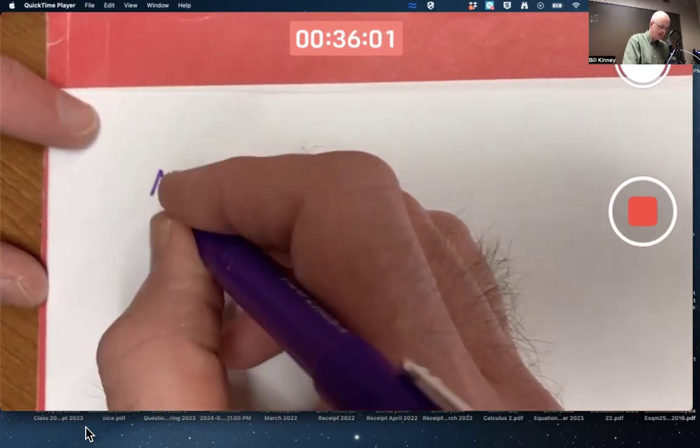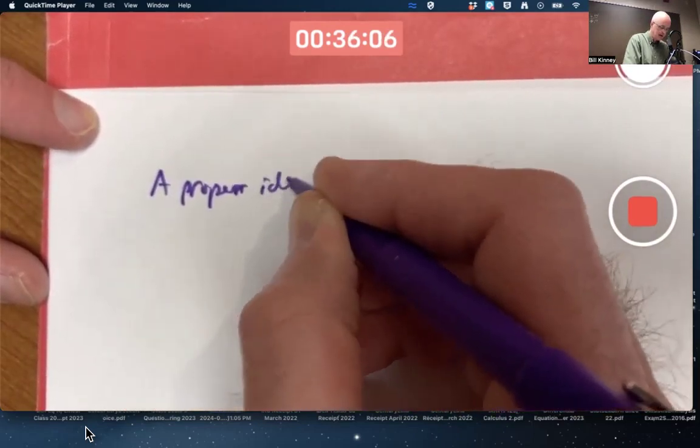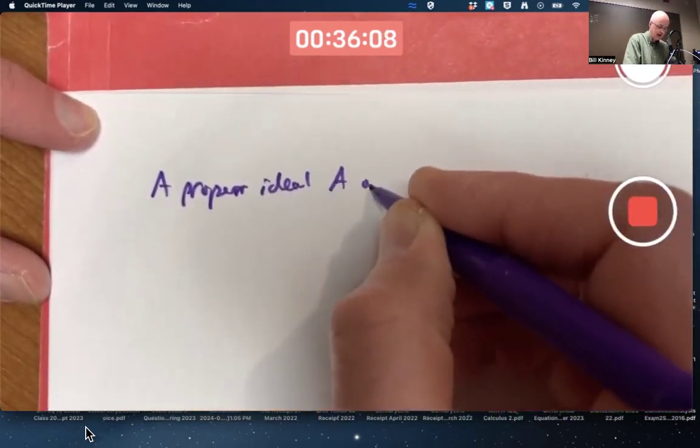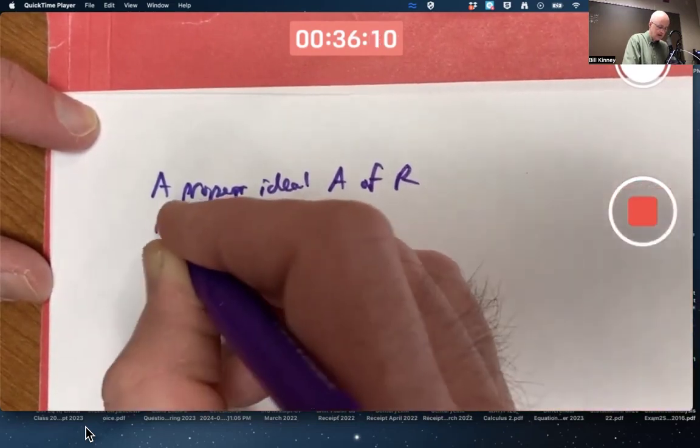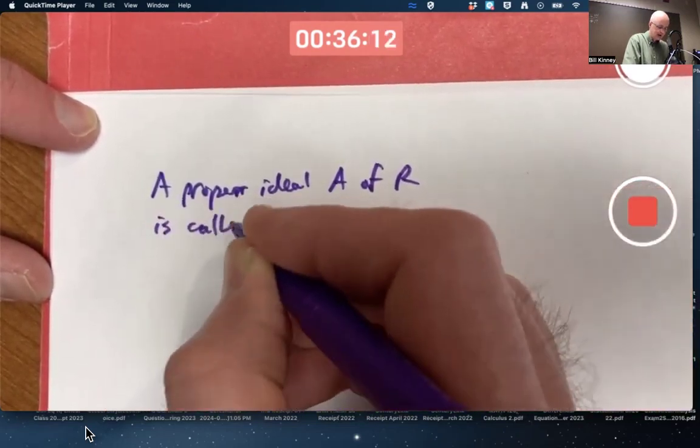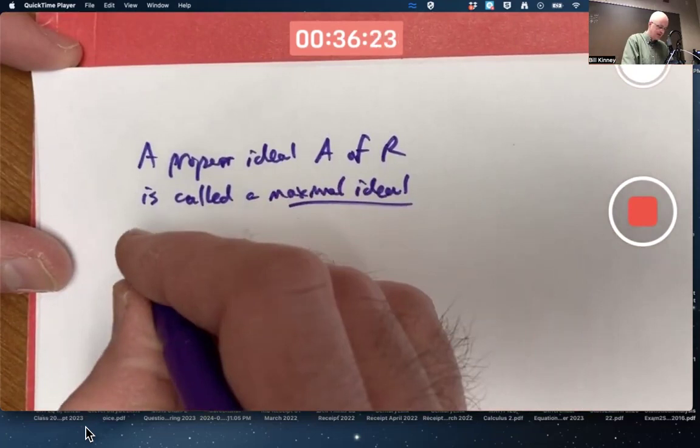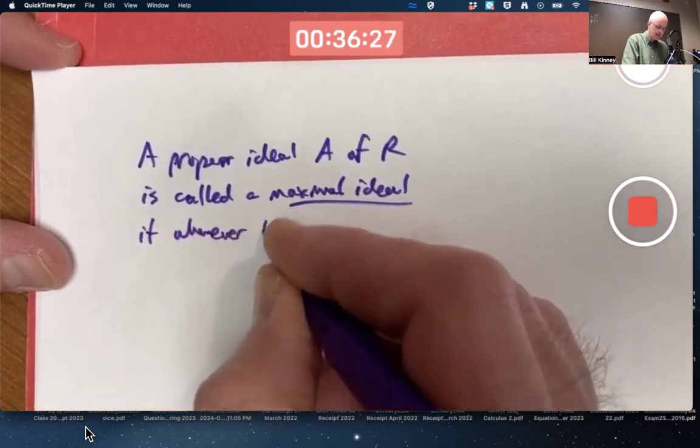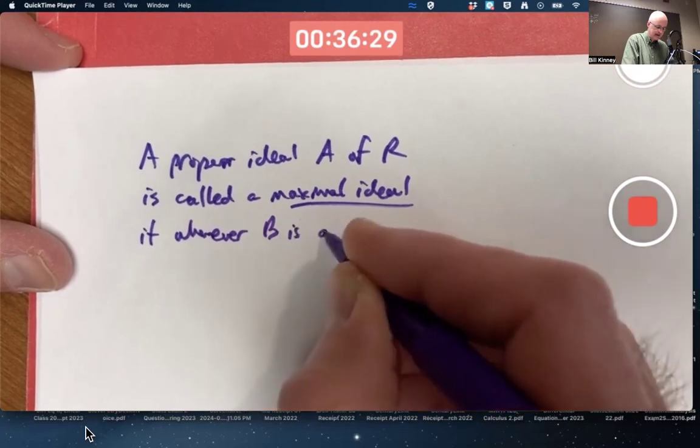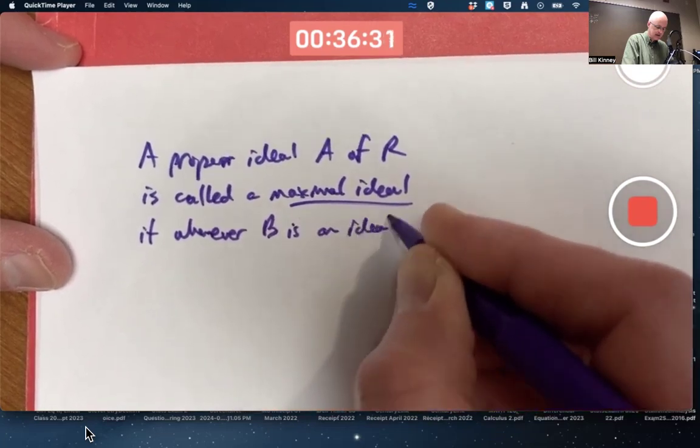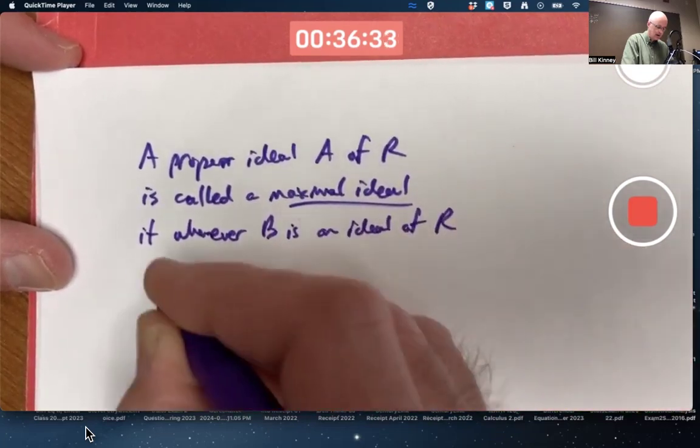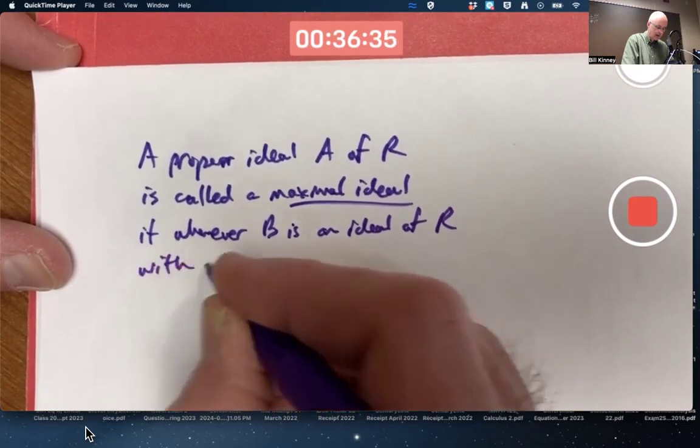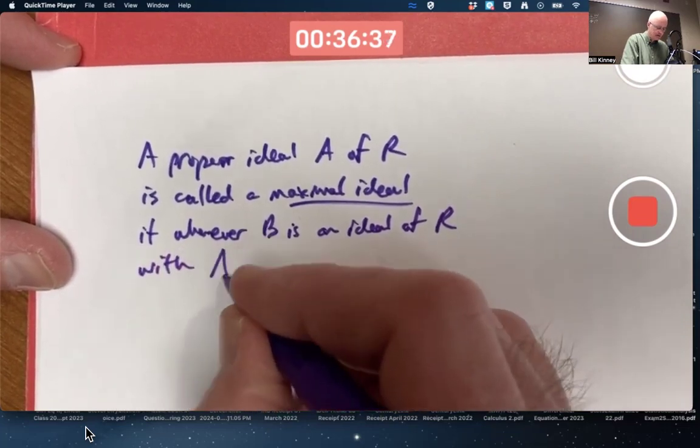The definition of a maximal ideal is a bit harder. A proper ideal A of R is called a maximal ideal if whenever B is an ideal of R with these inclusions being true...